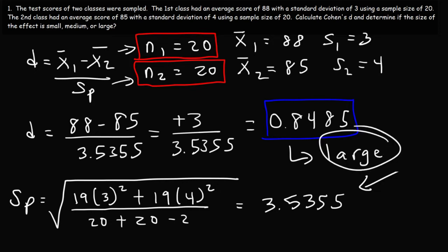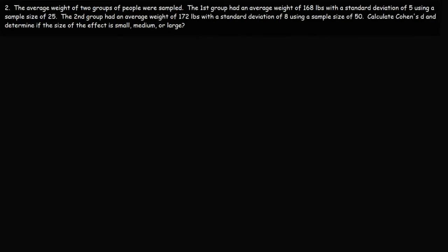Remember: if D is close to 0.2, the size of the effect is small; if it's close to 0.5, it's medium; and if it's close to 0.8 or even larger than 0.8, then the effect is large. Now let's move on to the next problem.